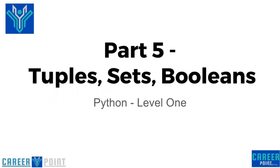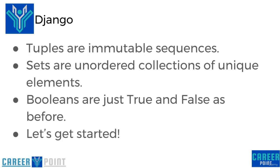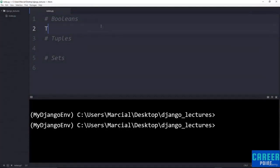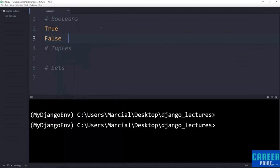Hello everyone and welcome to part 5: Tuples, Sets, and Booleans — the last basic data structures for Python we're going to be covering. Tuples are immutable sequences — they kind of act like a list, except you can't index something and try to change it. Sets are unordered collections of unique elements. Booleans in Python are True (with a capital T) and False (with a capital F). You can also use 0 and 1 in control flow statements, but it's more common to see True and False.